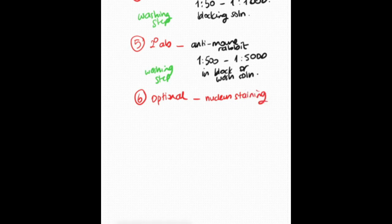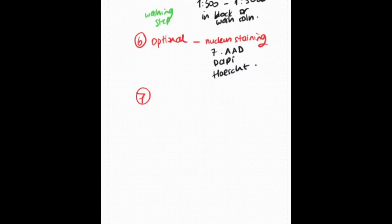Optionally, you can stain the nuclei. DAPI or Hoechst are most commonly used nuclear stains.